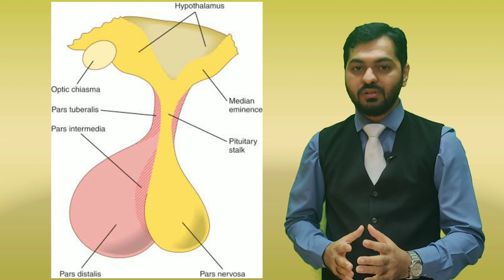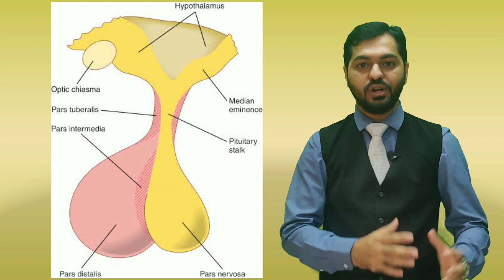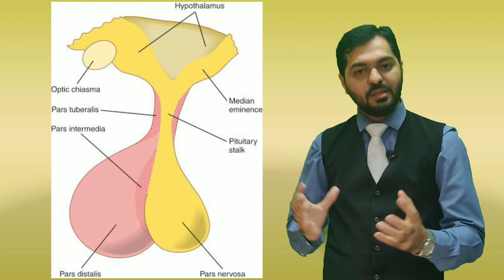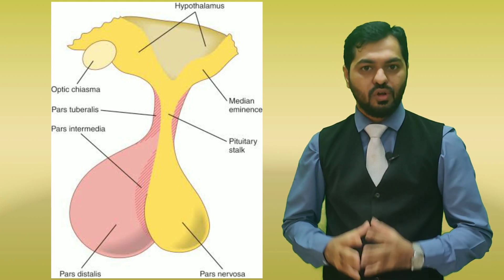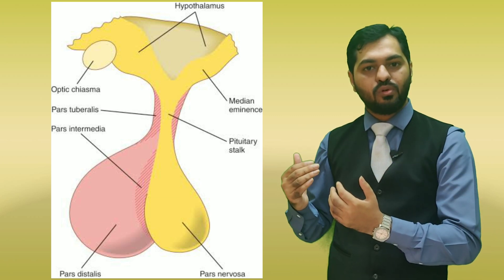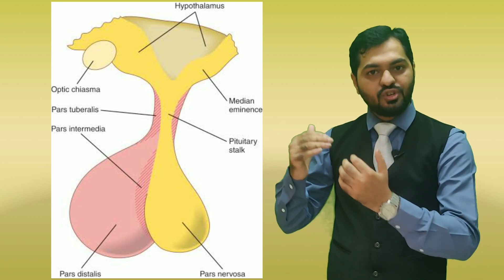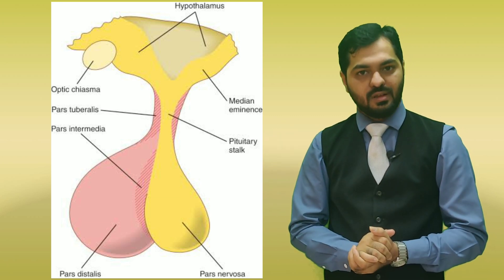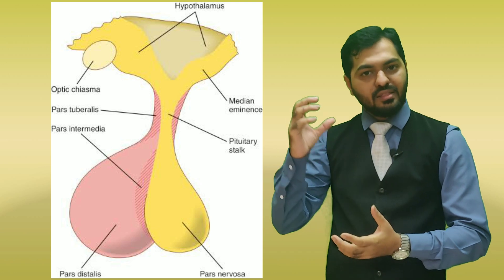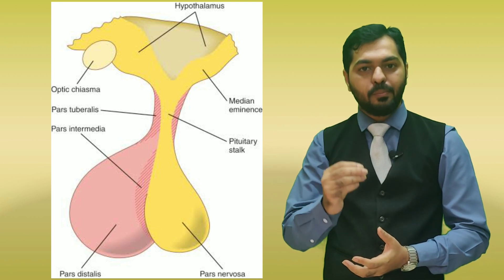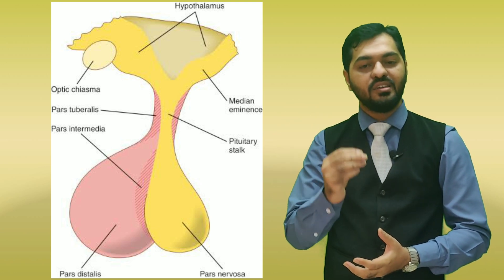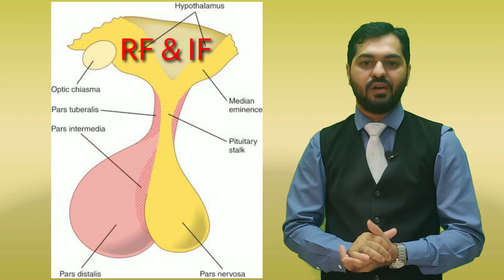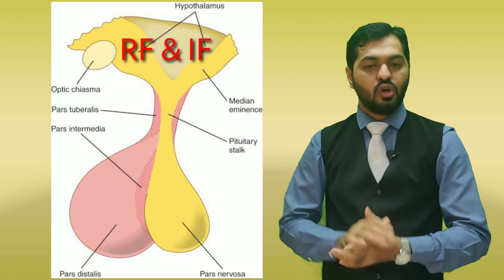We have discussed about portal circulation in one of my previous videos, so go through that to understand portal circulation. Here, the hypophysial portal vein opens up into the pars distalis, and in this portal circulation, the hypothalamic releasing factors and inhibiting factors are secreted.